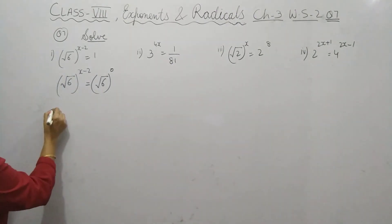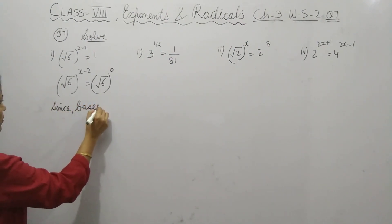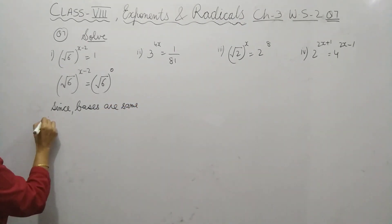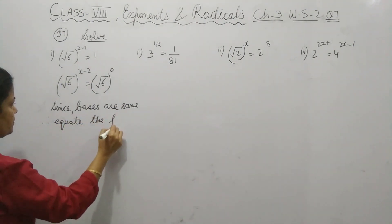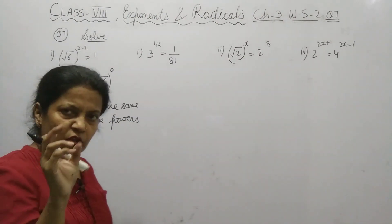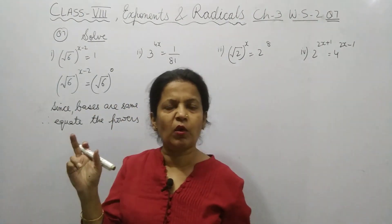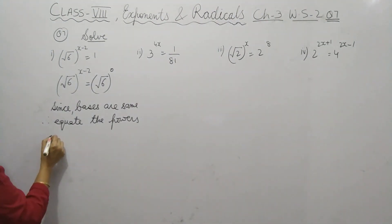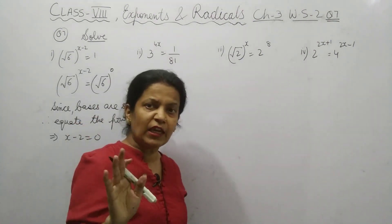You have to write since bases are same, therefore equate the powers. Base is same, so we can equate the powers. Why? Because both of them are given as equal. So it means that x minus 2 equals to 0. We have equated the powers.